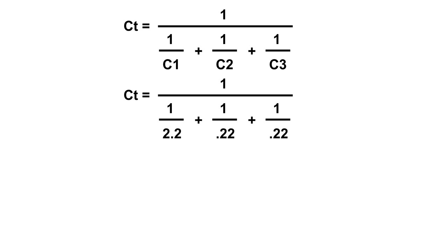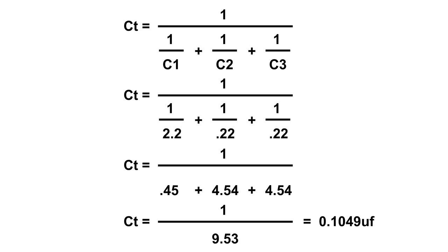And here are the values. We've got the 2.2 and the 0.22 and then the other 0.22. And that works out to be 0.45 plus 4.54 plus 4.54, and that is equal to one over 9.53. And the capacitance works out to be 0.1049 microfarads.